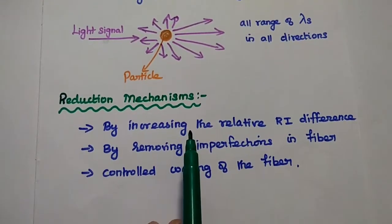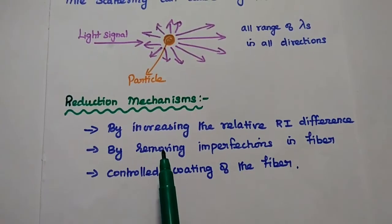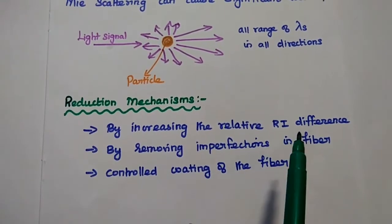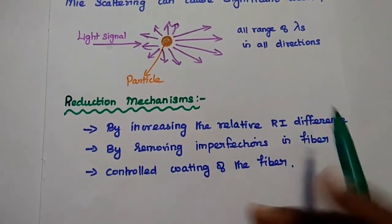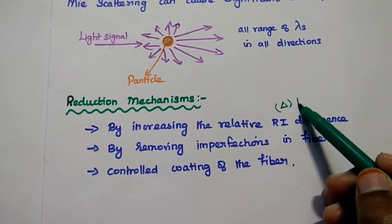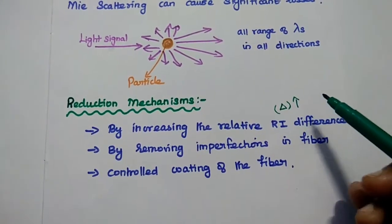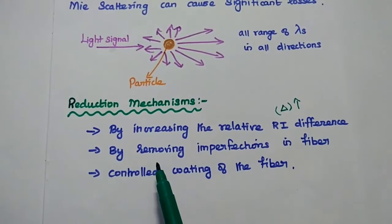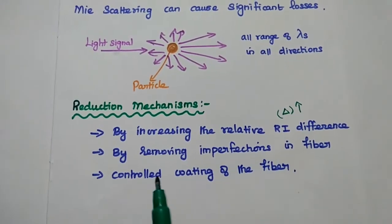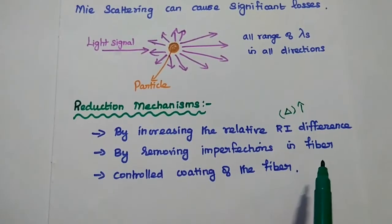The reduction mechanisms for Mie scattering include: increasing the relative refractive index difference, removing imperfections in the fiber, and controlled coating of the fiber. Increasing this refractive index difference helps reduce Mie scattering.